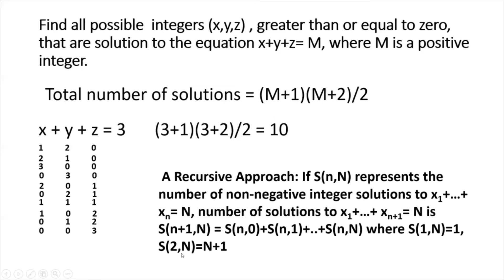And, of course, here I know what s1n is. So, that's equal to 1. And then I also know what s2n is. So, that's n plus 1. So, in this way, if I'm given a three variable problem, I can solve it. If I'm given a four variable problem, I can solve it, and so on. So, this is a recursive approach. And it's often used in mathematics and computer science.